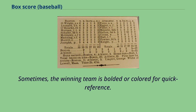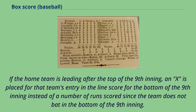Sometimes the winning team is bolded or colored for quick reference. If the home team is leading after the top of the ninth inning, an X is placed for that team's entry in the line score for the bottom of the ninth inning instead of a number of runs scored, since the team does not bat in the bottom of the ninth inning.